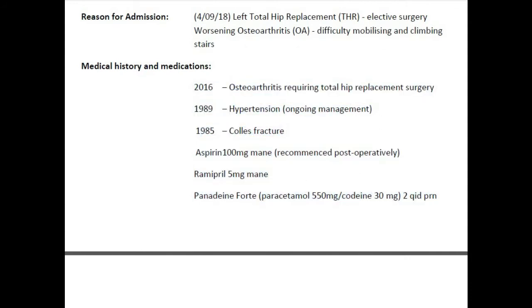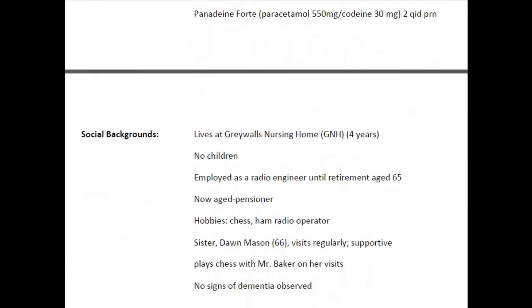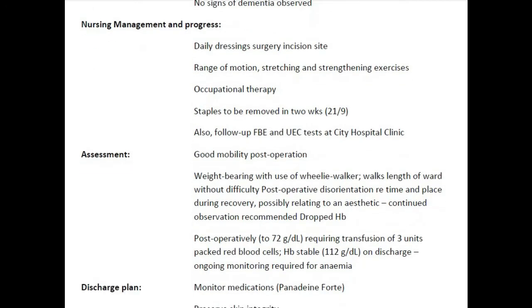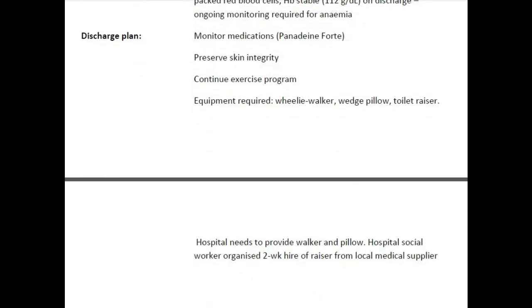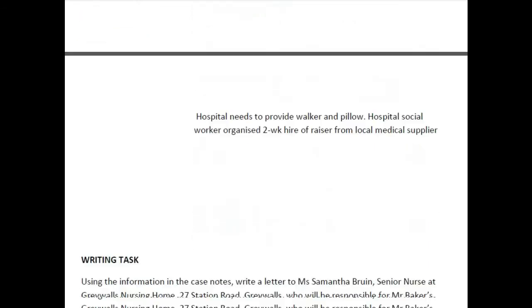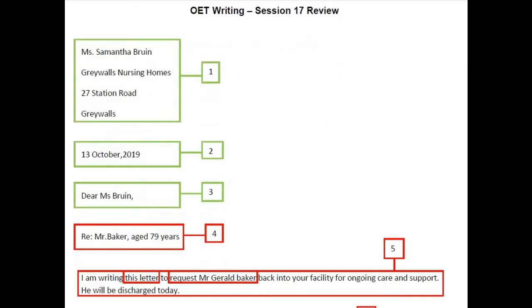All information provided in the social history can be omitted, as it is already familiar to the recipient. The important information to include in the letter is the treatment the patient received during his hospital stay and the service or treatment he is supposed to receive after discharge. In addition to continued care, he must also receive post-operative care, so we must focus more on that. All points mentioned in the discharge plan are very important.